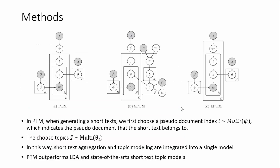Here we present three methods. In PTM, when generating a short text, we first choose a pseudo document index from a multinomial distribution. By this way, short text aggregation and topic modeling are integrated into a single model.